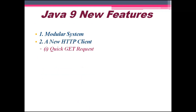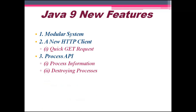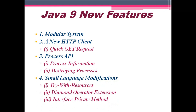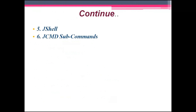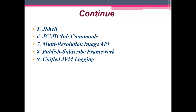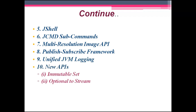The new features of Java 9 are: first, modular system; second, a new HTTP client that supports quick GET requests; third, process API for process information and destroying processes; fourth, small language modifications including try-with-resources, diamond operator extension, and interface private methods; fifth, JShell; sixth, JCMD subcommands; seventh, multi-resolution image API; eighth, publish-subscribe framework; ninth, unified JVM logging; and tenth, new APIs for immutable set and optional-to-stream.